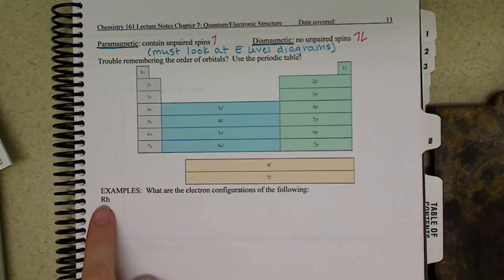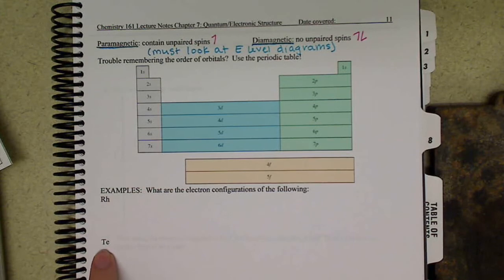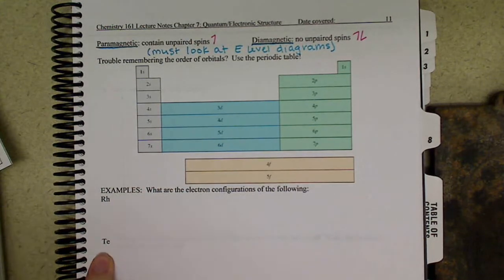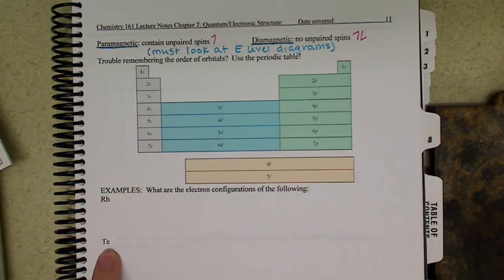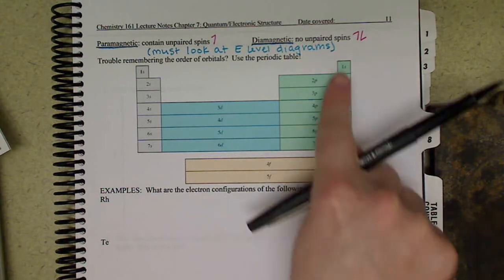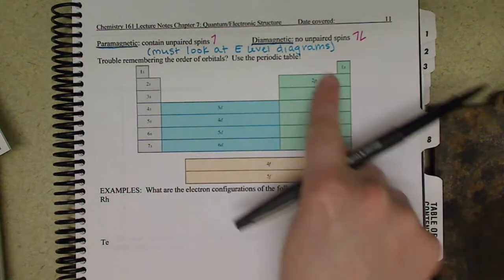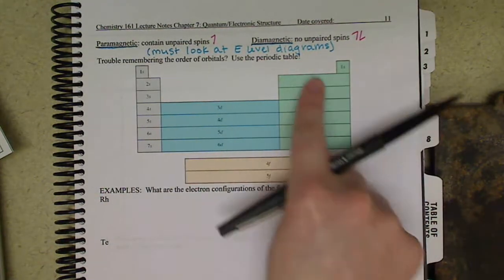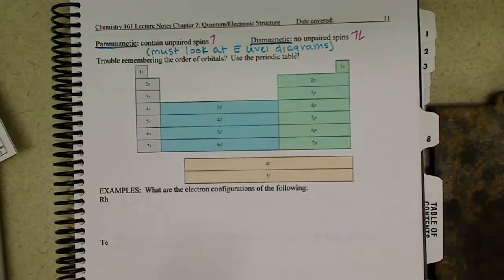I want to work through a couple examples. I'm going to do rhodium with you and tellurium, just so you can see how to use the periodic table and this concept here to write out your electron configurations.